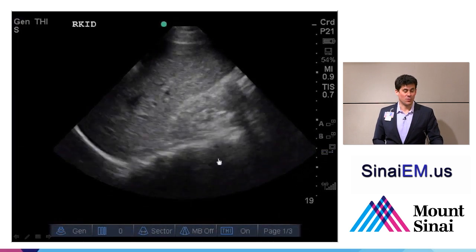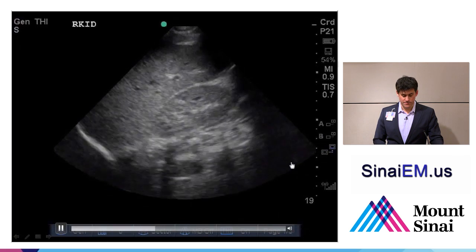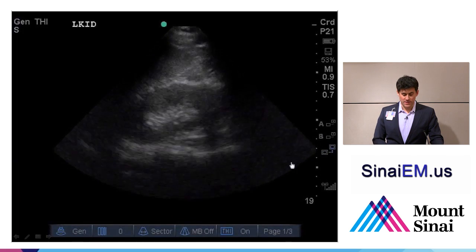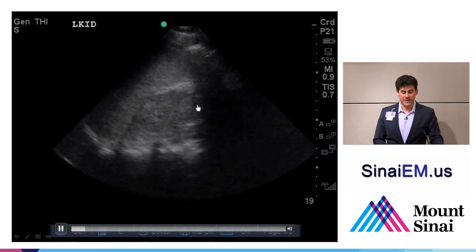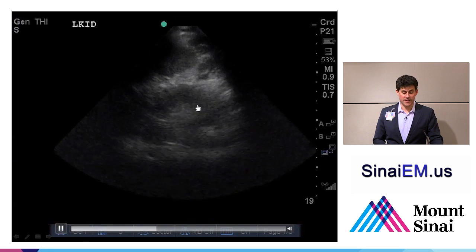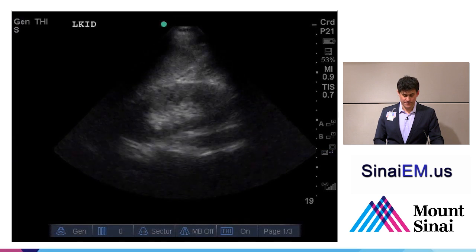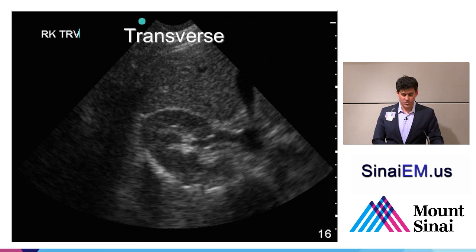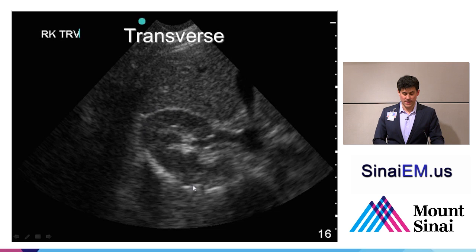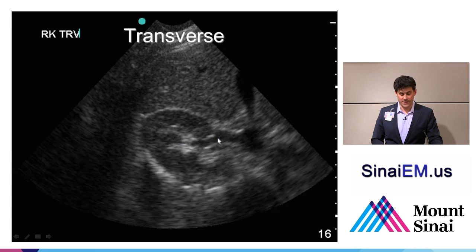We also don't want to miss fluid around the kidney. Similarly on the left side, the sonographer fans from posterior to anterior through the entire structure of the kidney. In the transverse view, the kidney looks more round or oblong and not as long as in the longitudinal view. We still see the outer cortex, inner medulla, and some of the collecting system as it exits through the hilum of the kidney.